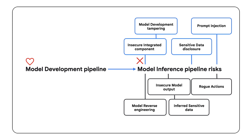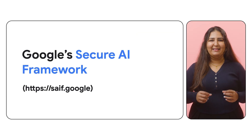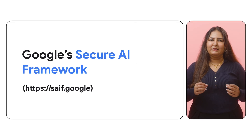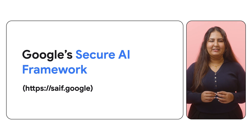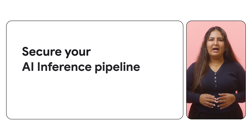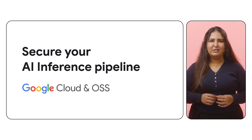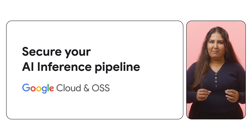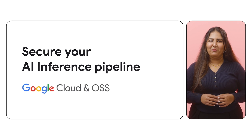Malicious actors can gain unauthorized access, steal sensitive data, or even use your model for nefarious purposes. Stick around, and in the next few minutes we will use Google's Secure AI Framework to understand the risks in the AI inference pipeline. We will also explore how to mitigate these risks using the security capabilities in Google Cloud and open source software. Let's get started.